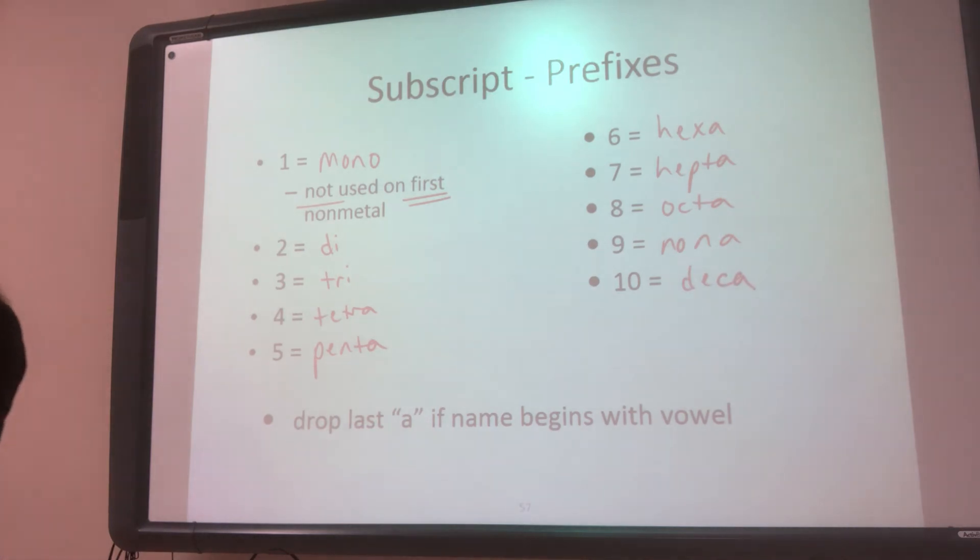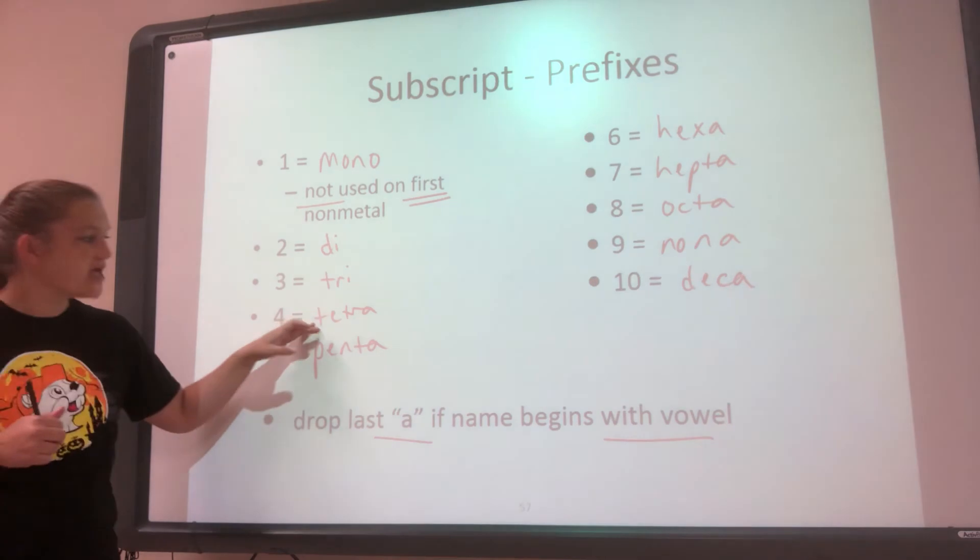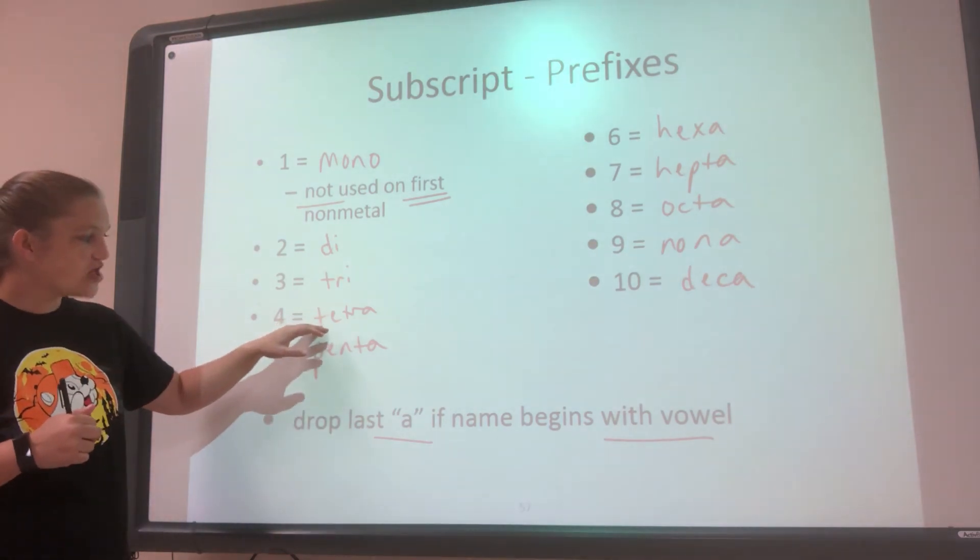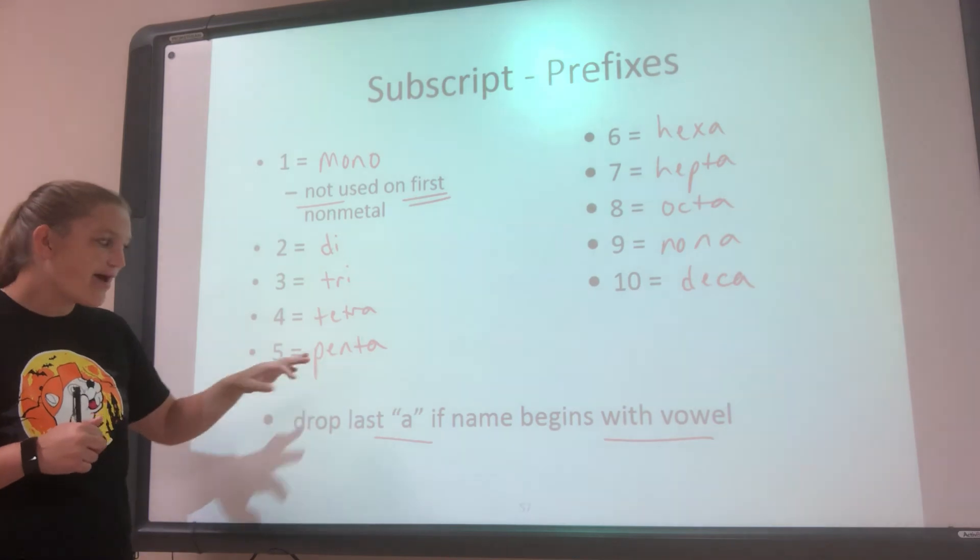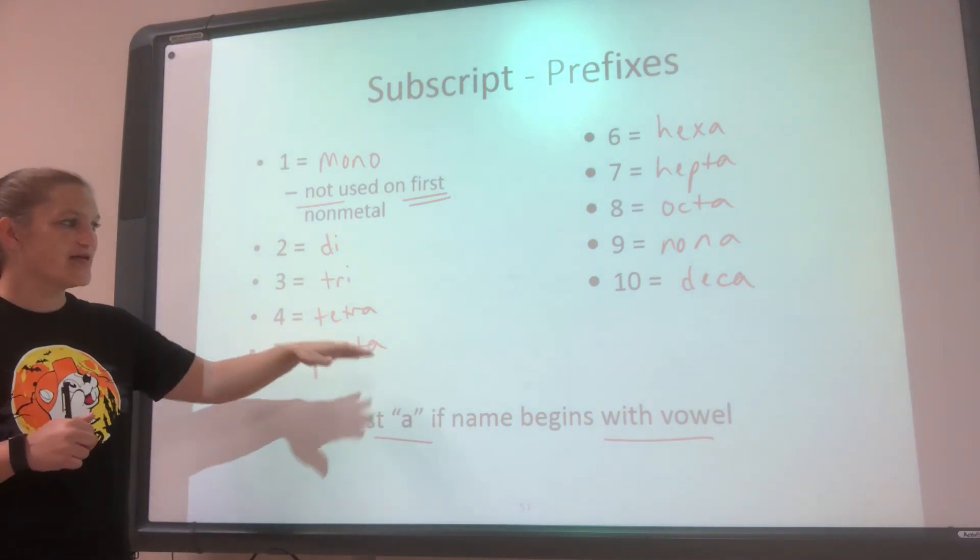Now if the name of the element begins with a vowel, we're going to drop the A. So say the element is iodine. We don't say tetra-A-iodine, we say tetraiodine. So pentiodine, not penta-A-iodine. There's not an A there.